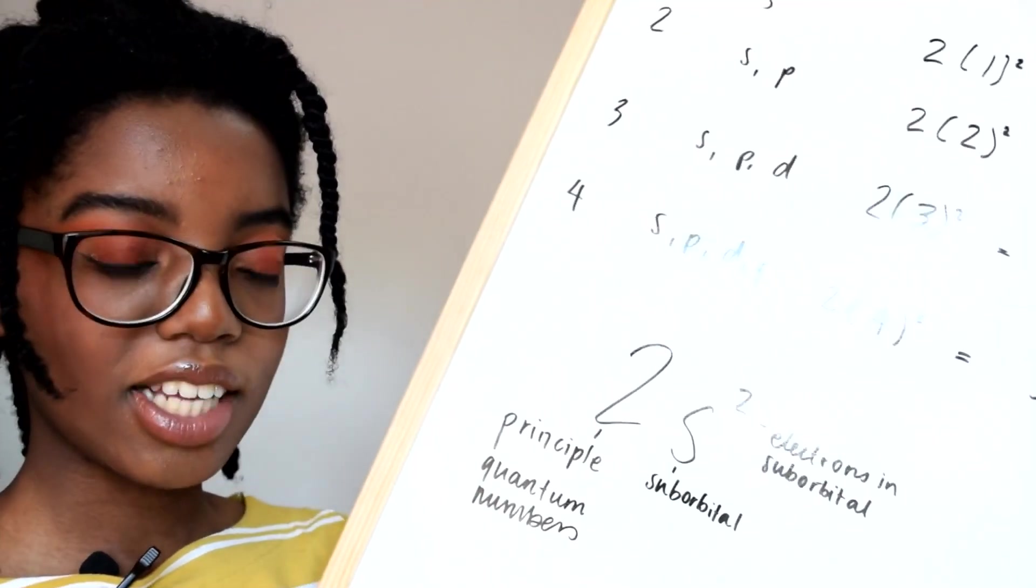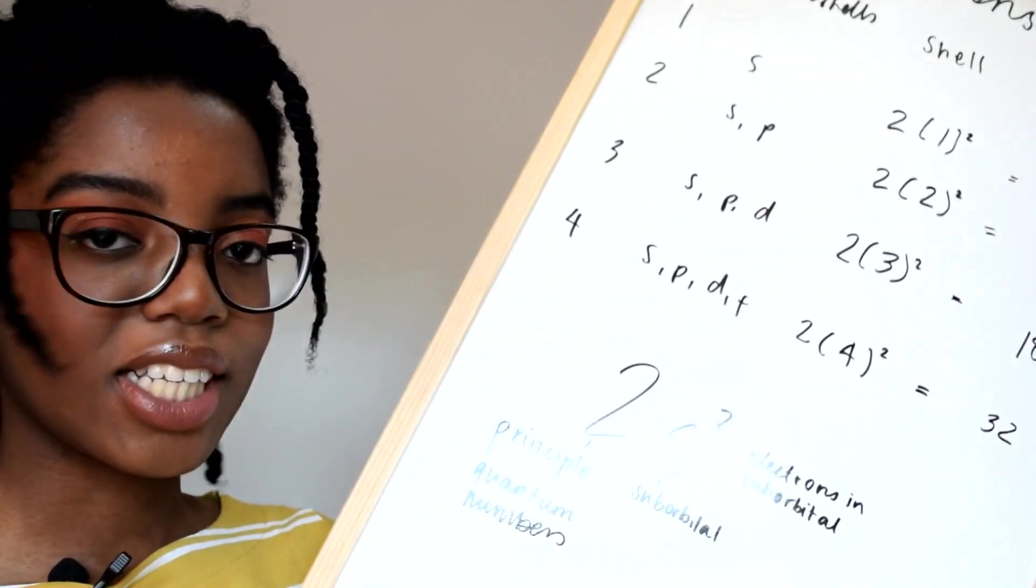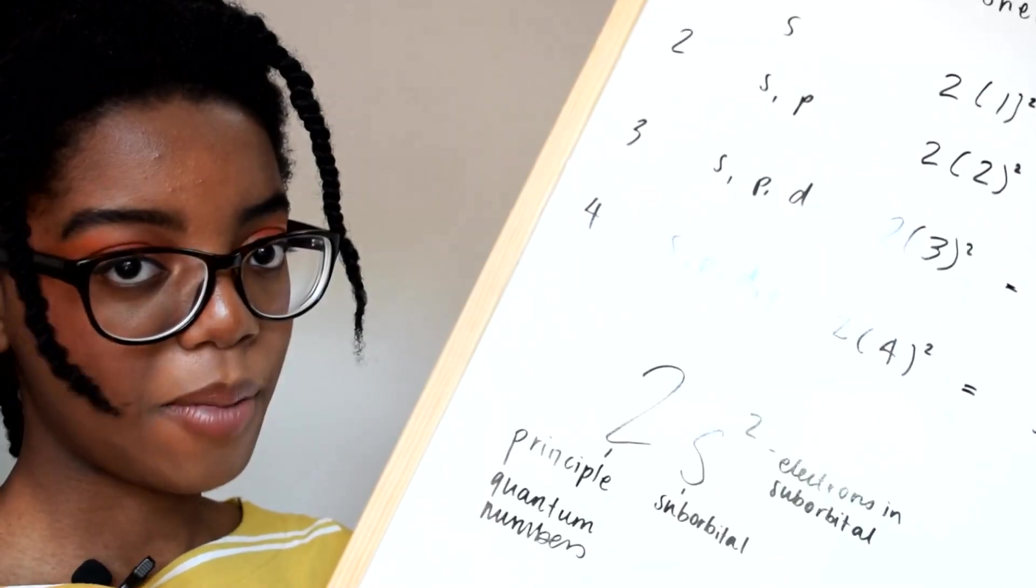This is needed to write electrons from our periodic table and ions and things like that, especially in transition elements.